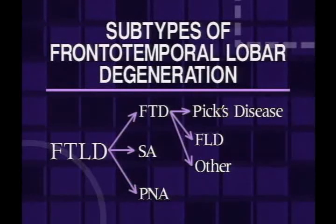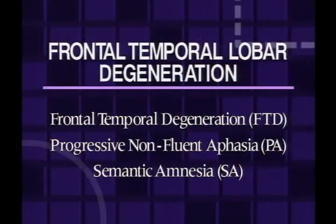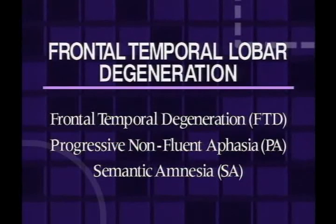So consequently, you start off with this big umbrella term referred to as frontotemporal lobar degeneration, and it then divides into multiple other types of diseases. Frontotemporal lobar degeneration can be broken into frontotemporal degeneration, or FTD, progressive non-fluent aphasia, and semantic amnesia. The latter two require a neuropsychologist with specific testing to distinguish them from other types of intellectual loss, such as Alzheimer's disease or stroke-related intellectual loss.